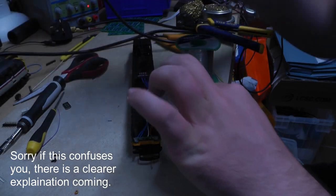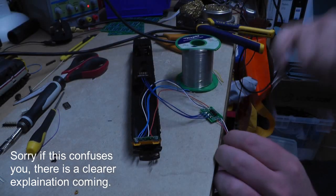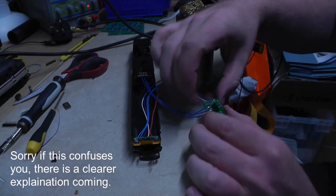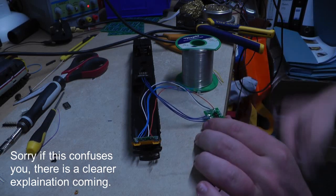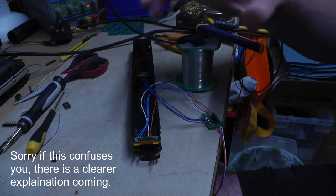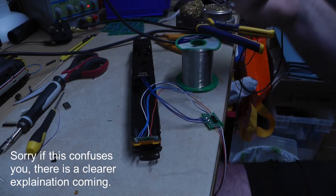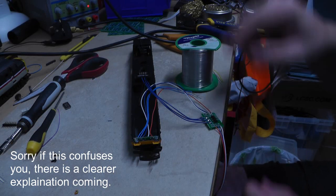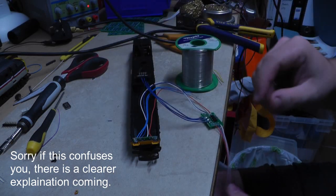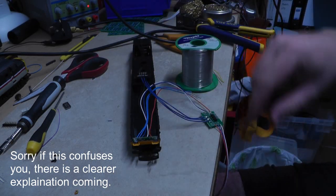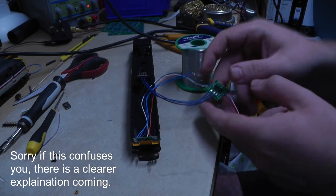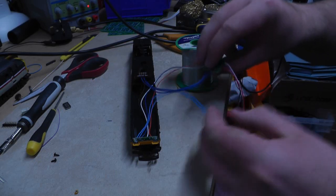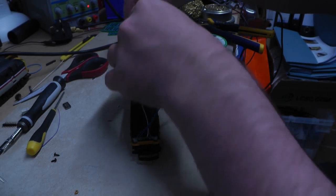But obviously if your loco is an old Lima style and it doesn't come with a DCC socket, then the easiest thing would be to use the left and right rail solder pads up here. But like I said, because we've got this eight pin socket, if we ever decide to revert back to digital or analogue, it'll work regardless. So now that's in. Now that's all wired up. That now just fits inside the loco.